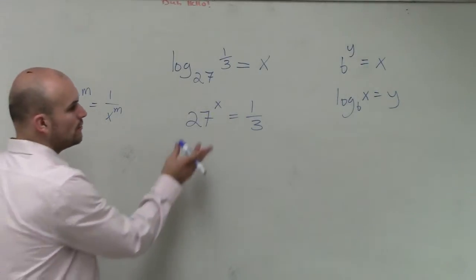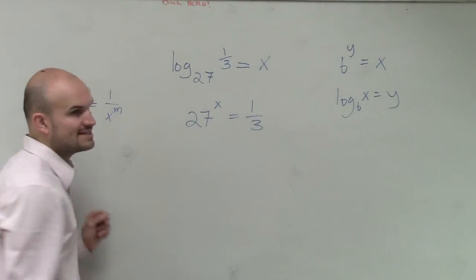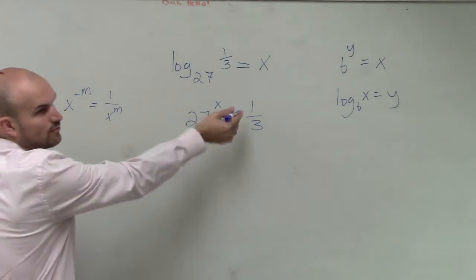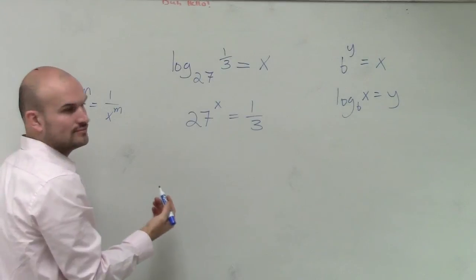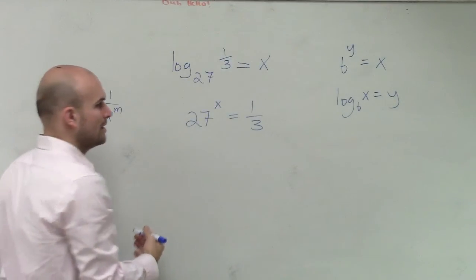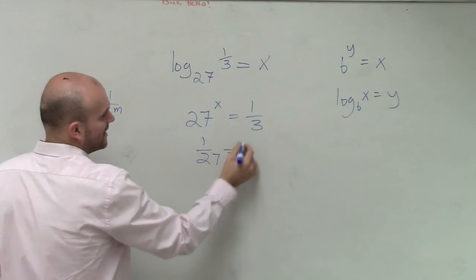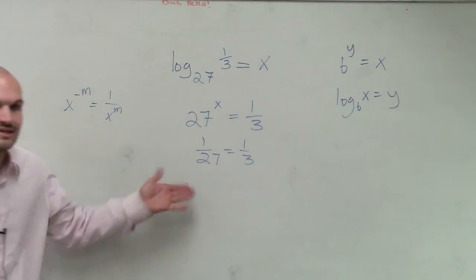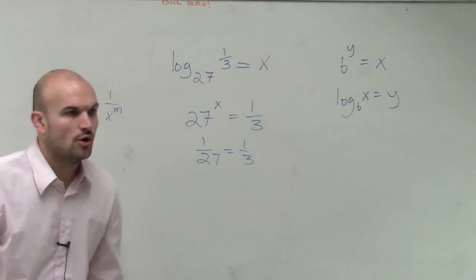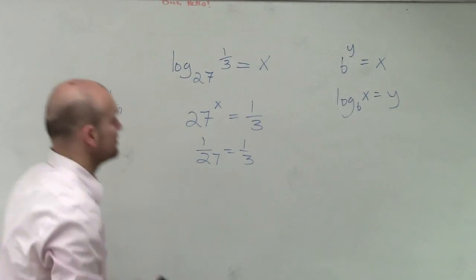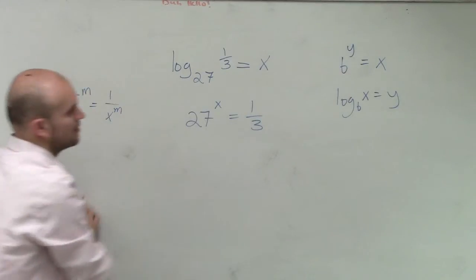Now let's see, how can we go from 27 to 3? Because really, let's say we did negative 1, right? Let's pretend x equals negative 1. If x equals negative 1, then we'd have 1 over 27 equals 1/3. But we want to get this to be exactly the same. So how am I going to get 27 to 3?